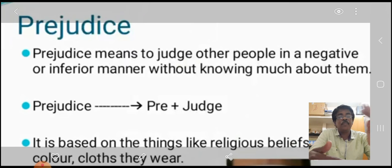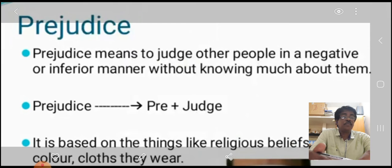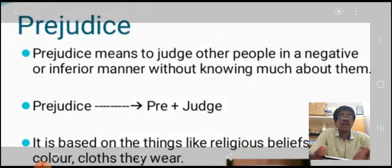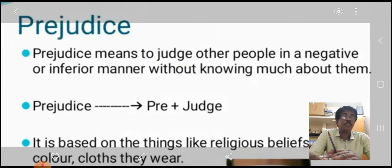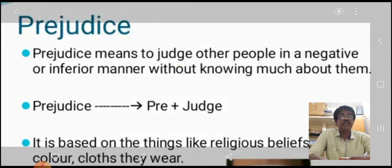Prejudice is based on things like religious beliefs, color, and the clothes they wear. The prejudiced person sees only one thing without knowing the full picture — that is called prejudice.